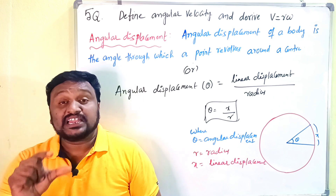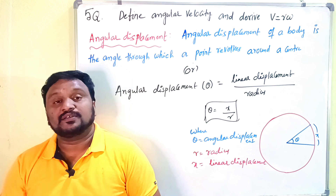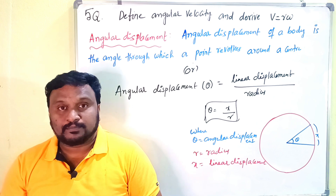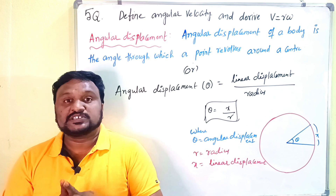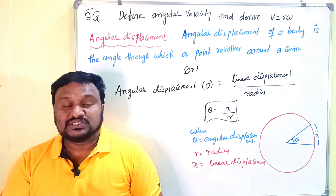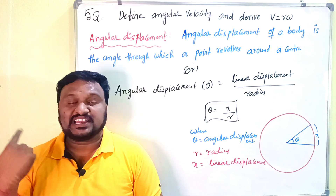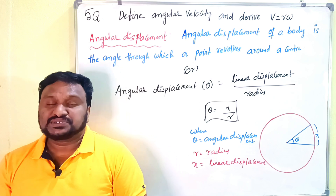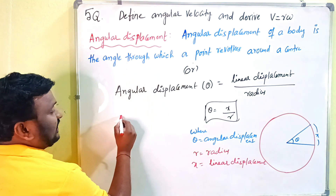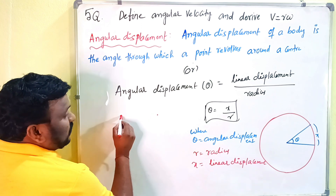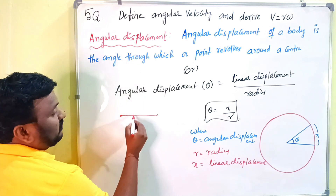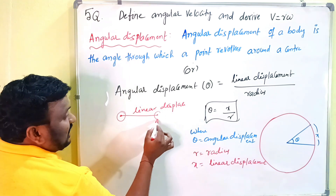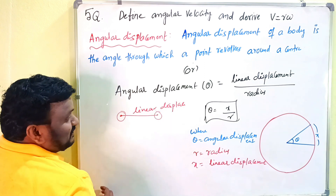First we have to know: what is angular displacement? The angular displacement of a body is explained with respect to one point — how much angle is made by the point while it is in circular motion about the center of the circle. That is called angular displacement. In contrast, linear displacement is a straight line joining the initial point and the final point.